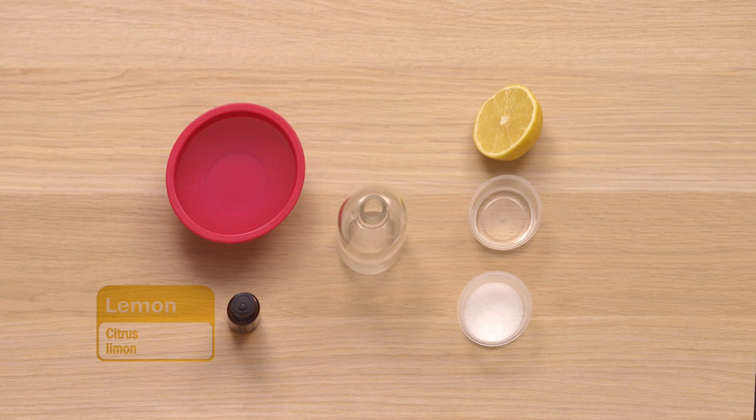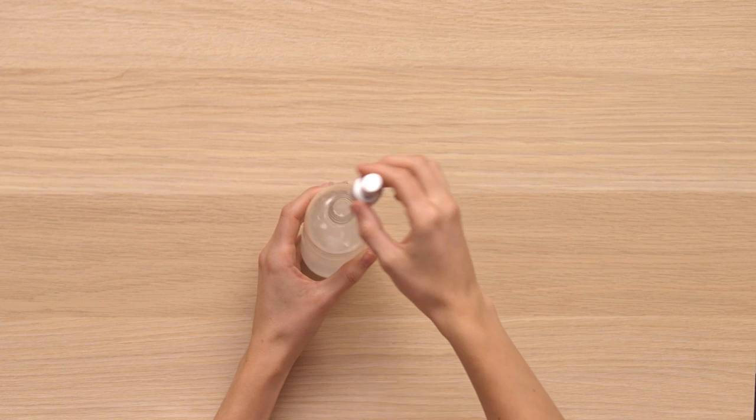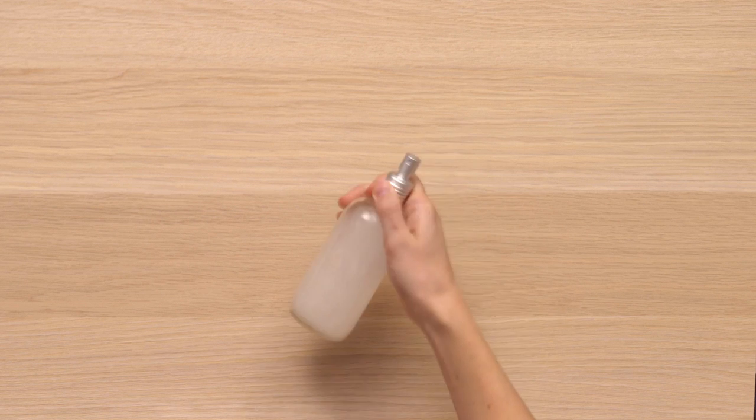Add all of the ingredients to the spray bottle, screw on the top, and shake vigorously for approximately 10 seconds. The sea salt will dissolve once you finish shaking the bottle.